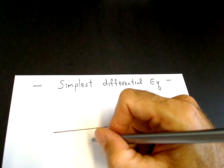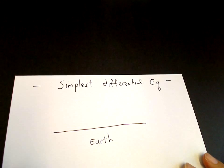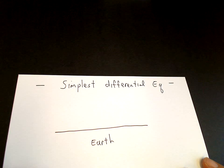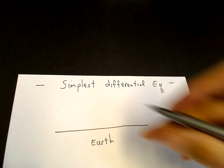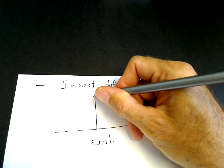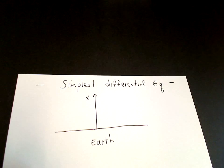We have the earth down here, and we're considering the motion of a mass falling nearby the surface of the earth. We put a coordinate system here which we'll call the direction pointing up x.